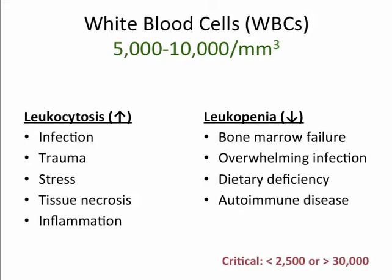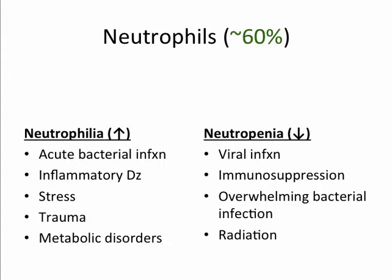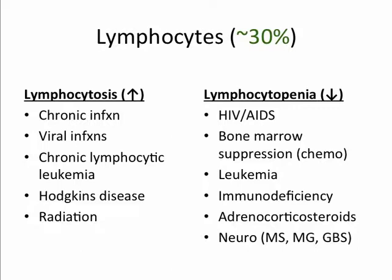Neutrophils are produced within 7 to 14 days following acute inflammation or bacterial infection and primarily perform phagocytosis of foreign bodies or tissues. Neutrophils are often reduced in overwhelming bacterial infection and immunosuppression, where the immune system is essentially weakened or overwhelmed. The lymphocytes include mature T cells from cellular immunity and B cells. Lymphocytes are increased in chronic and viral infections, as well as with leukemia and Hodgkin's disease. Lymphocytes are decreased in bone marrow suppression and immunodeficiency or immunosuppression. Anytime you hear of steroids, think immunosuppression.